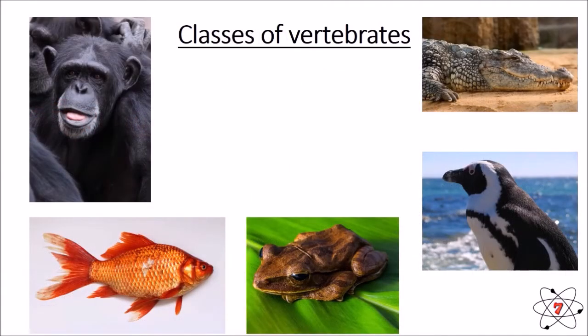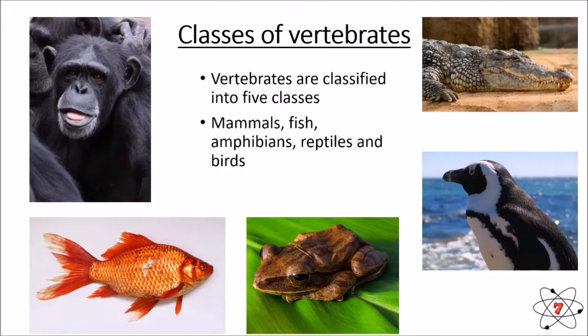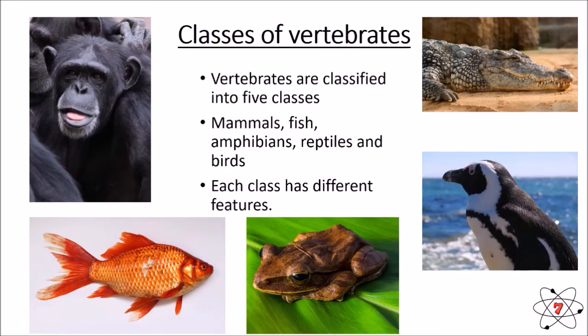Although invertebrates are put into phyla when we classify them, vertebrates are placed into what we call classes, and there are five different classes of vertebrates: mammals, fish, amphibians, reptiles, and birds. Each class has very different features that allow us to classify them correctly. All mammals have things in common with each other, and all birds have things in common with each other.